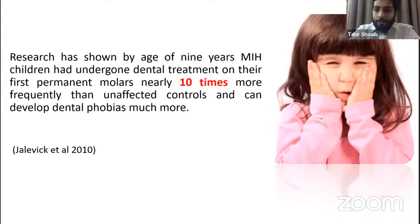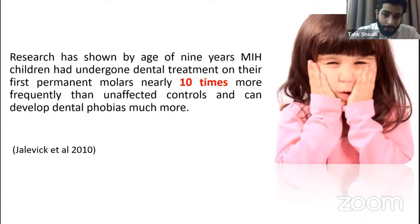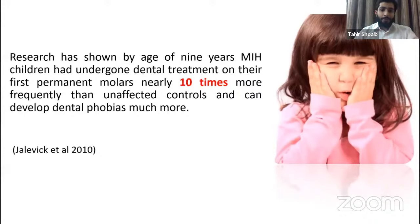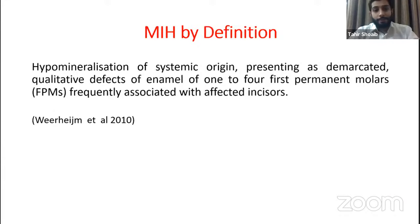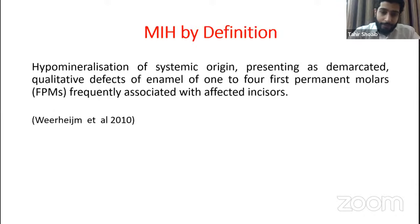I'd like to start the presentation with this slide. Research has shown that by age nine, children affected with MIH have undergone dental treatment 10 times more than controls. And it's for this reason that these children develop dental phobias much more than children who are not affected with this condition. So basically, they have all odds against them. MIH, by definition, is hypomineralization of systemic origin, presenting as demarcated opacities and a qualitative defect of enamel, affecting one to four first permanent molars, and it can frequently associate with affected incisors as well. This definition was given by Weerheijm back in 2010.